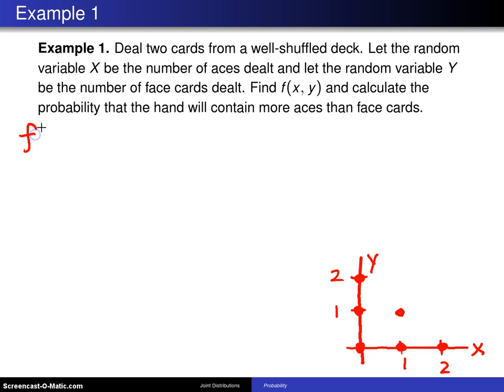When we're going to write down the joint probability mass function, we're going to have to put this support down. One way to write that is x equals zero, one, and two; y equals zero, one, and two. But that wouldn't be right because that would be this square region here, nine points, not these six. So we can throw in the constraint x plus y is less than or equal to two.